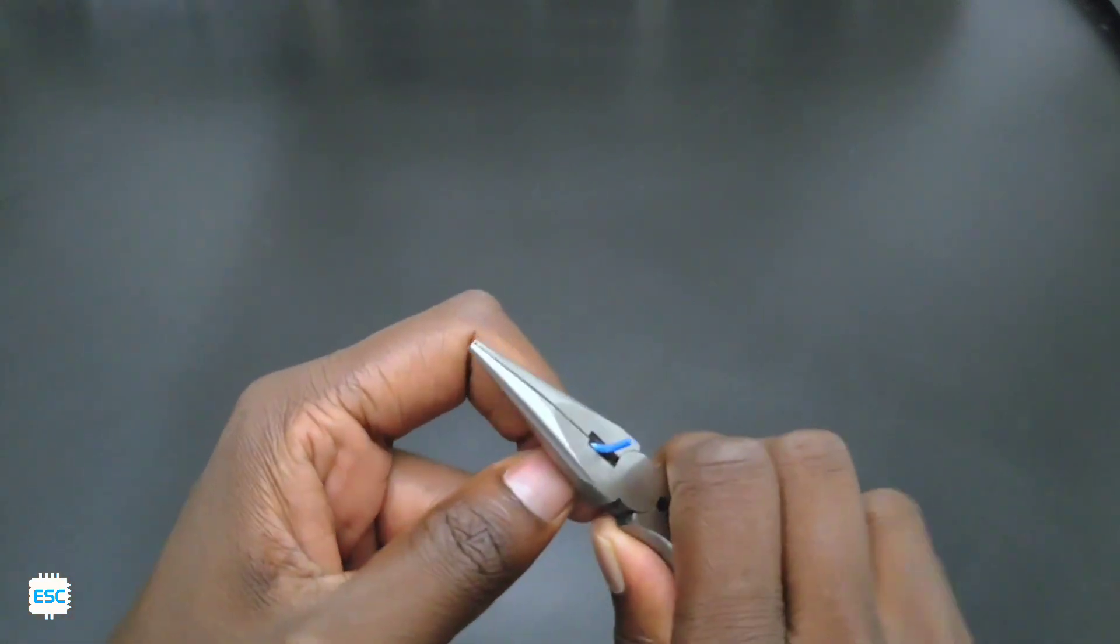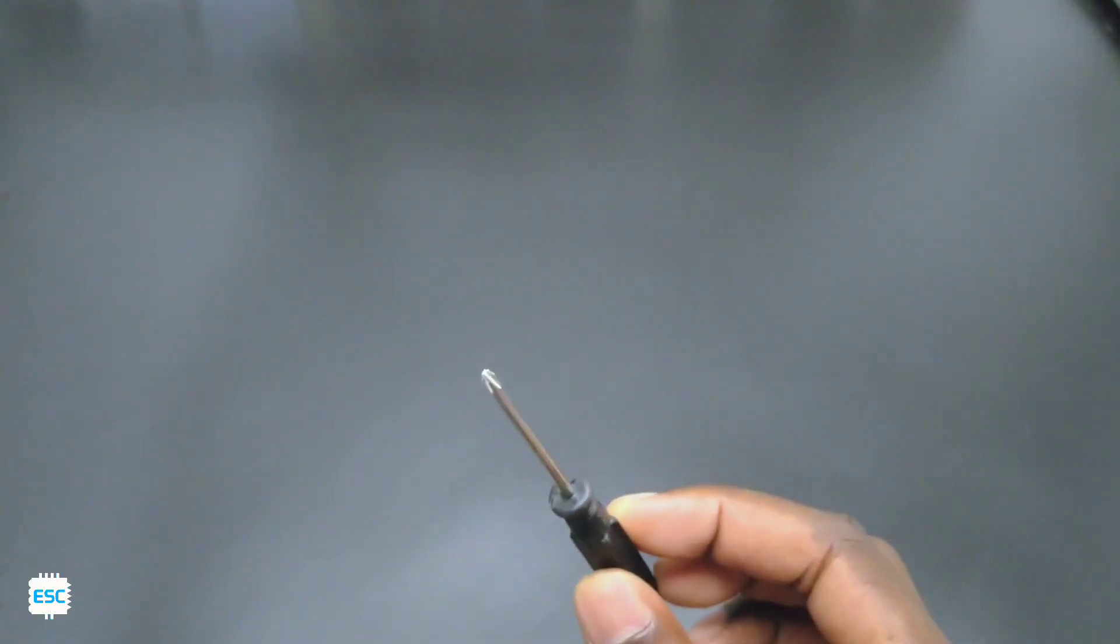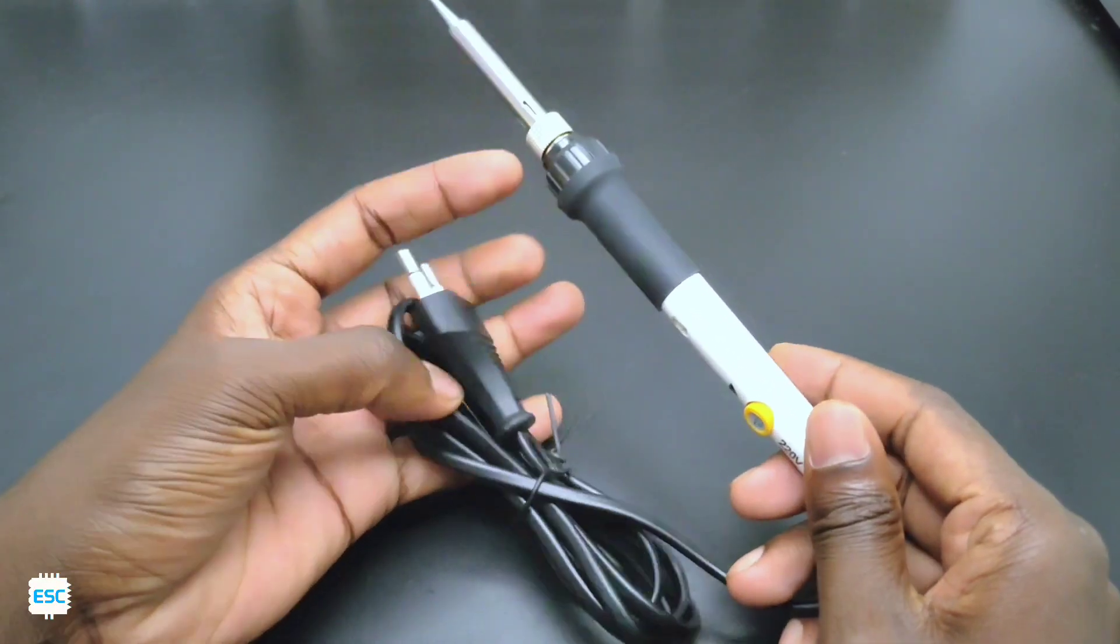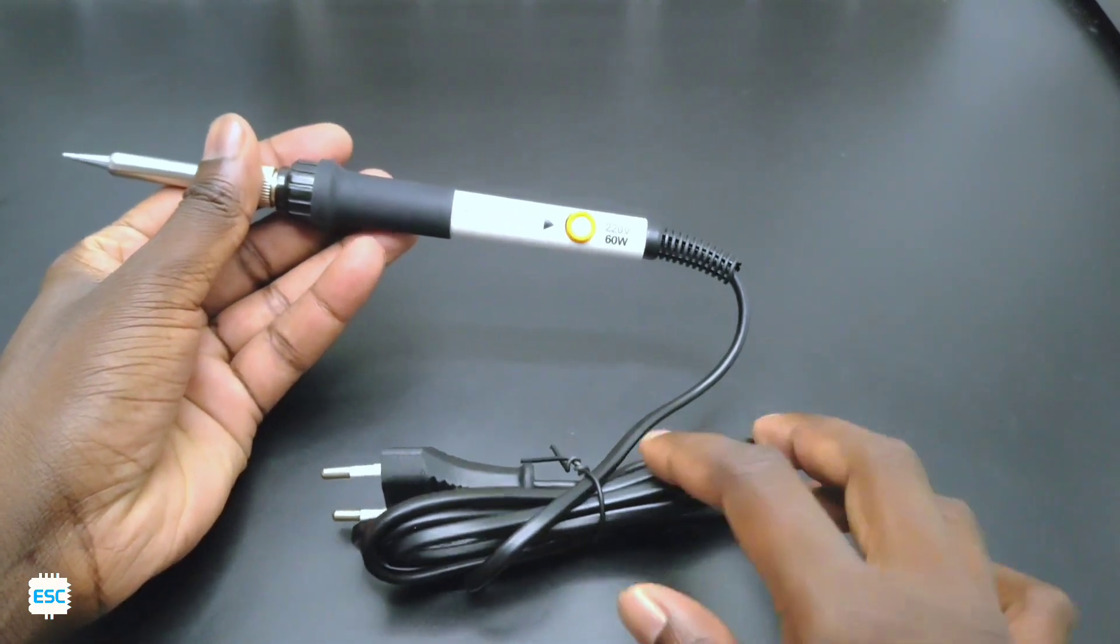Next we got this screwdriver. This is a Phillips head one. Now the soldering iron. Without a soldering iron we can't do any electronics work. Here we got a good quality beginner friendly soldering iron.